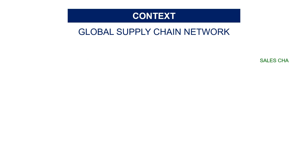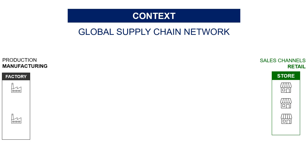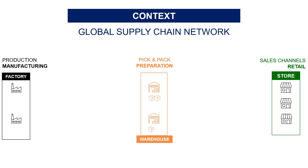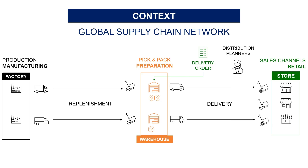Let's take the example of a global supply chain network of a clothing retailer. You have stores all around the world that are replenished by regional and global warehouses storing goods produced in factories. Planners send replenishment orders and delivery orders to replenish warehouses and stores. We will focus here on the store delivery. The question is: how can we use data analytics to improve the distribution flow?